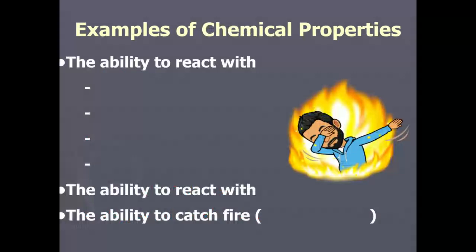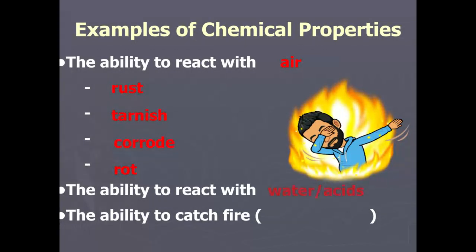The second type — chemical properties — involve the ability to react with air and water, which includes rusting like iron rusts, tarnishing like silver tarnishes, corroding, and simply rotting. If you leave a vegetable outside, it'll rot. Then there's the ability to react with water or acids, and lastly the ability to catch fire, which is called flammability.